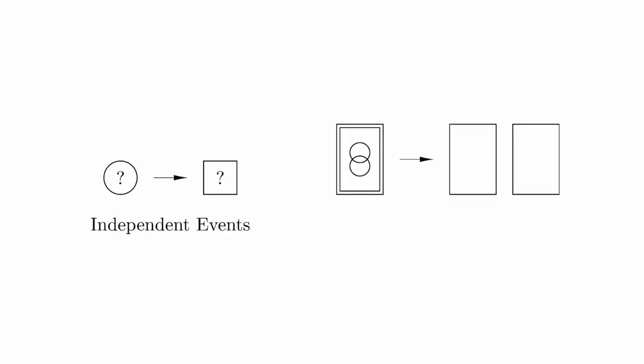When working with probabilities involving multiple random outcomes, it is important to understand the relationships between those outcomes. Two events are independent if one does not influence the outcome of the other. If you flip a coin and then roll a die, there's no reason to think that the outcome of the coin flip will impact the outcome of the die roll. However, if you deal two cards from a standard deck, the probabilities for the second card are influenced by the first card.